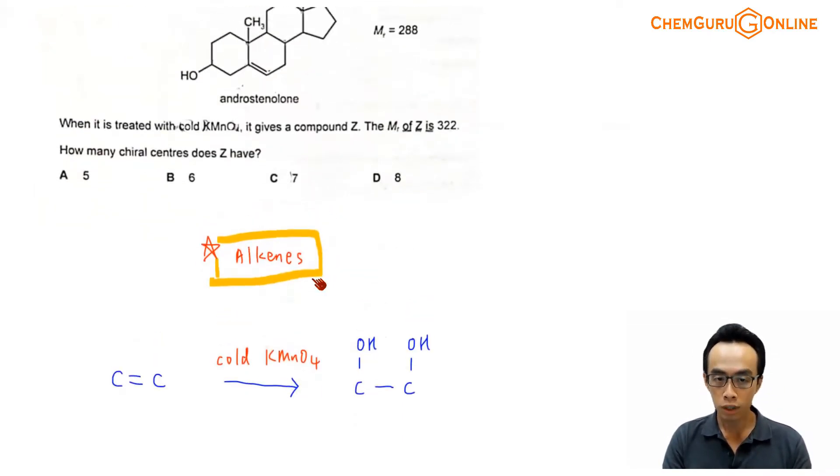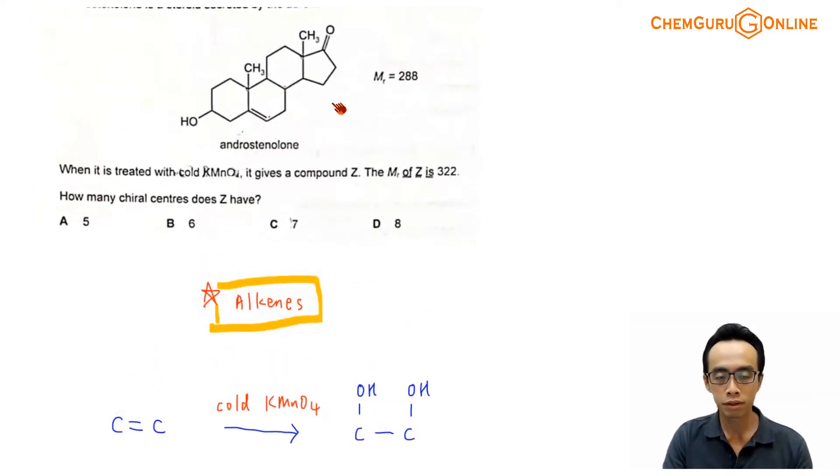So we notice the functional groups present in this compound that can be oxidized will be my secondary alcohol. We have an OH group here. Now secondary alcohol can be oxidized by manganate, but it requires heating. So cold KMnO4 shouldn't oxidize this secondary alcohol, so we will leave this alone. I have an alkene functional group present. We know that alkene can be oxidized by cold manganate and hot manganate, so most likely my alkene will be affected.